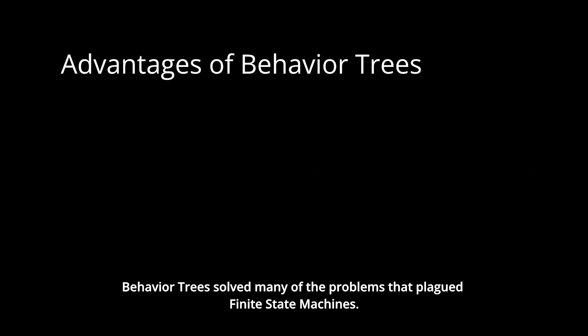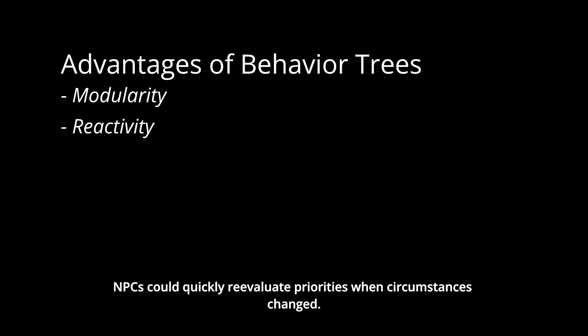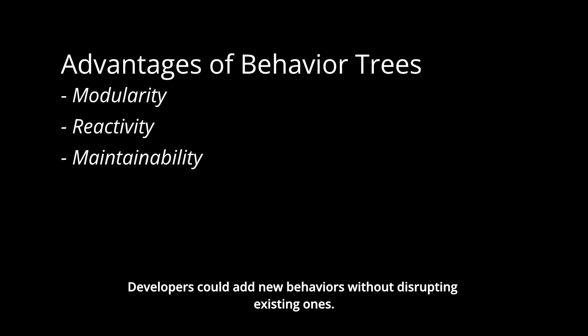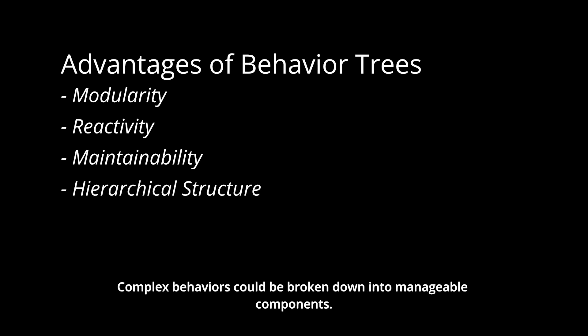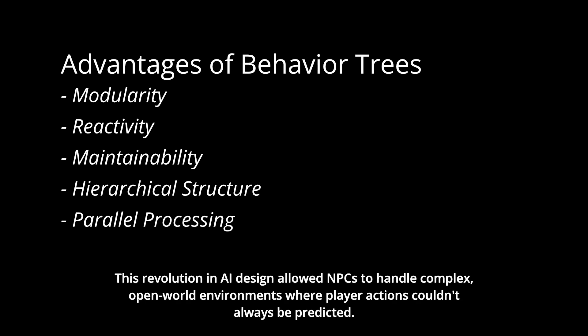Behavior trees solved many of the problems that plagued finite state machines. Subtrees could be reused across different character types, making development more efficient. NPCs could quickly re-evaluate priorities when circumstances changed. Developers could add new behaviors without disrupting existing ones. Complex behaviors could be broken down into manageable components, and characters could handle multiple concerns simultaneously. This revolution in AI design allowed NPCs to handle complex open-world environments where player actions couldn't always be predicted.